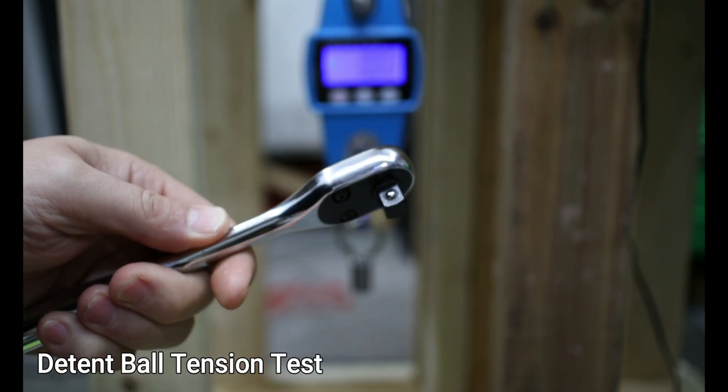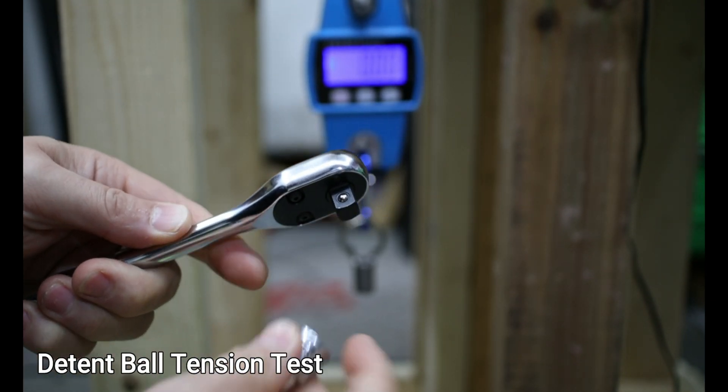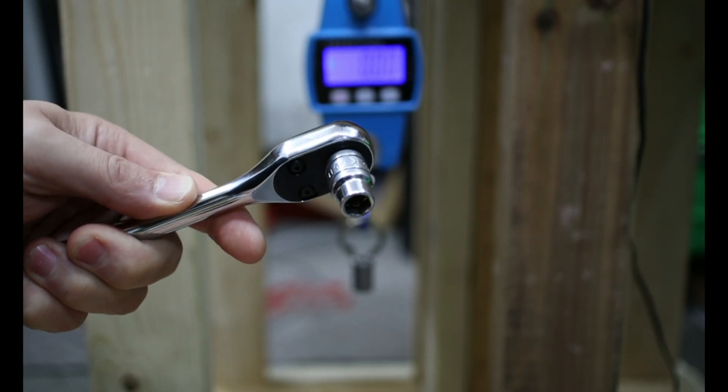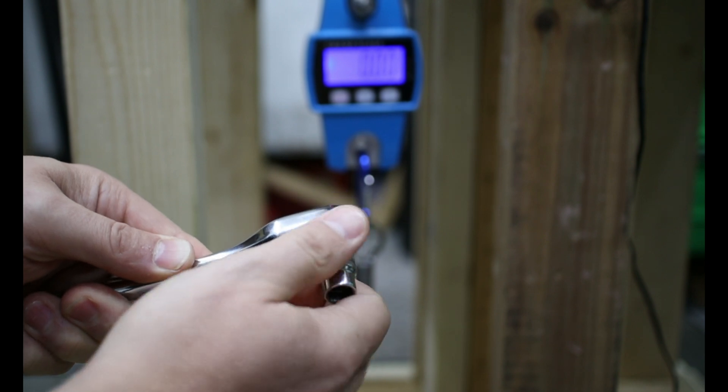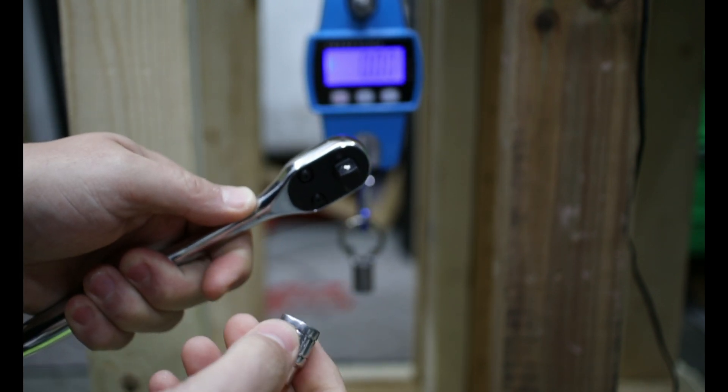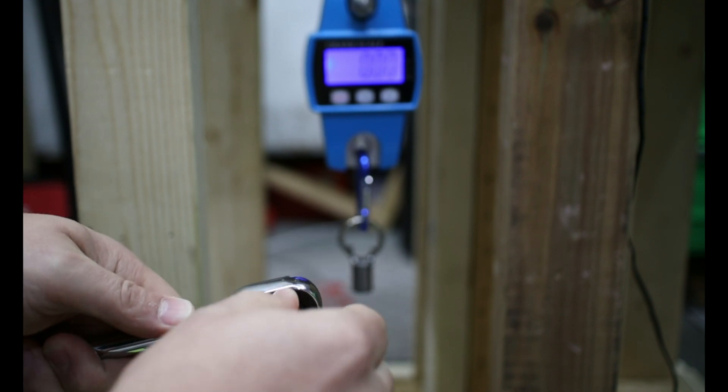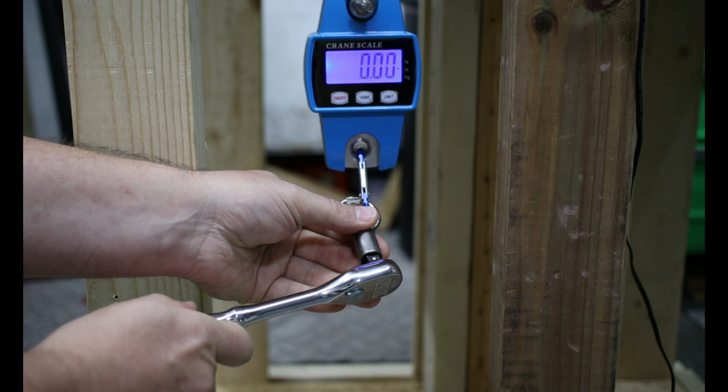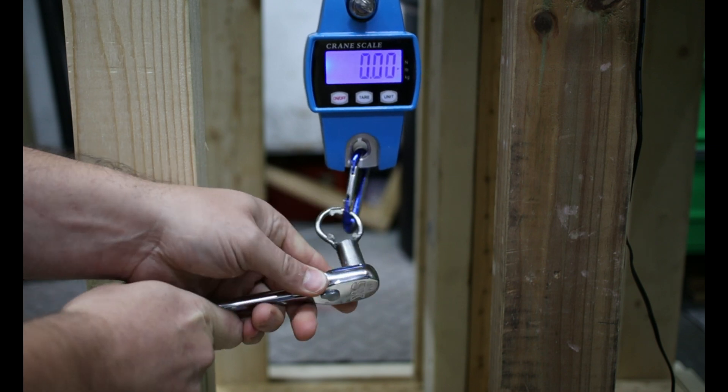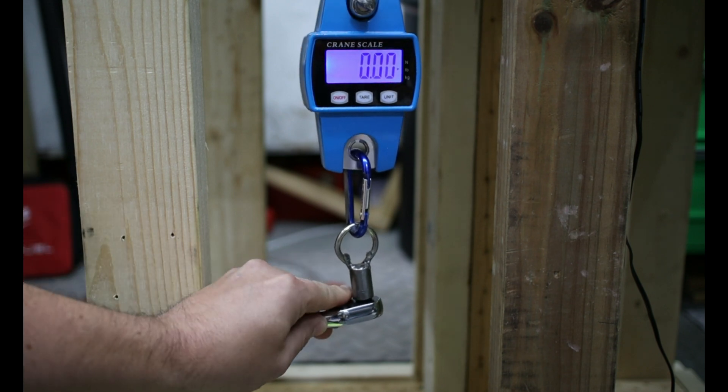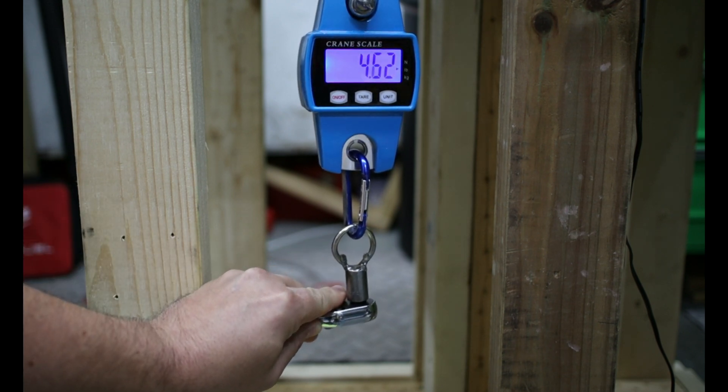Now testing out the ball detent might seem like a very trivial thing, but by the time you use one of these smaller sockets, maybe you get some fluid or grease on your hands, these sockets can actually be pretty difficult to take off. In this case, we're going to be using one socket consistently for all the brands that we test. We'll make sure that ball detent is always forward and then we'll test to see just how much force is required to take off that socket.